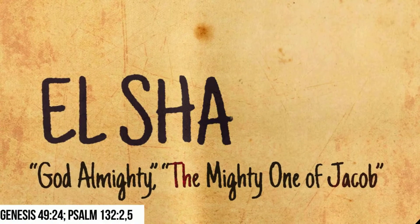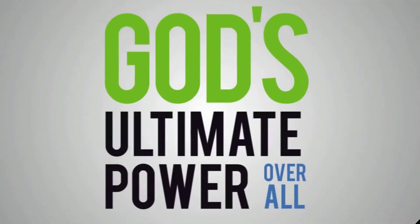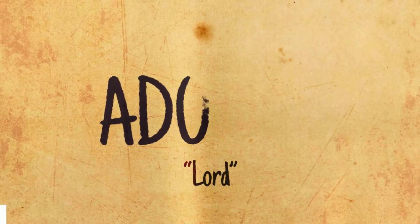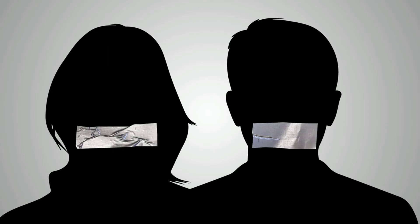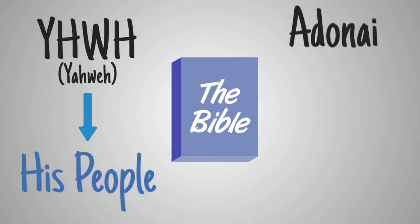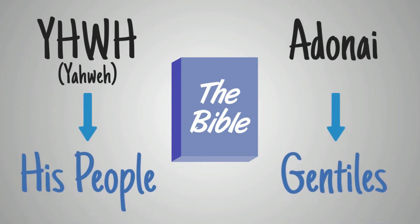El Shaddai — God Almighty, The Mighty One of Jacob. Speaks to God's ultimate power over all. Adonai — Lord. Used in place of Yahweh, which was thought by the Jews to be too sacred to be uttered by sinful men. In the Old Testament, Yahweh is more often used in God's dealings with his people, while Adonai is used more when he deals with the Gentiles.